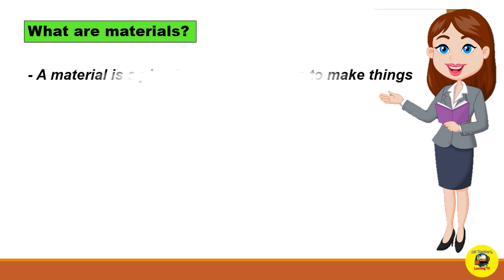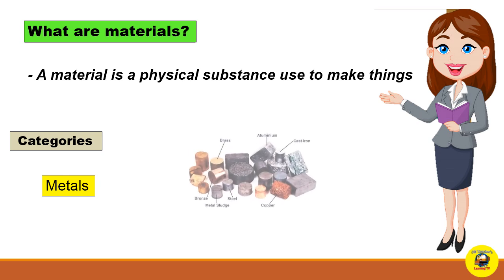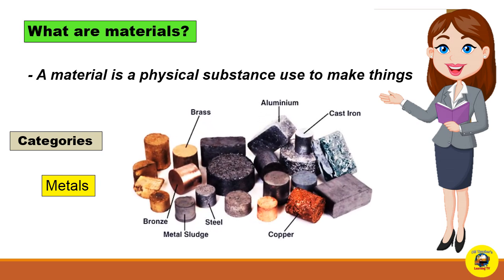A material is a physical substance used to make things. It is categorized according to metals, which consists of the following: iron, bronze, steel, brass, aluminum, and copper.